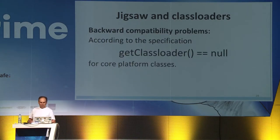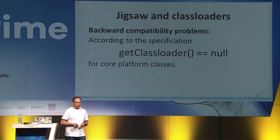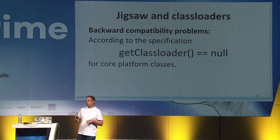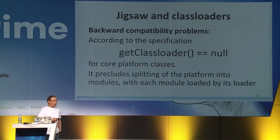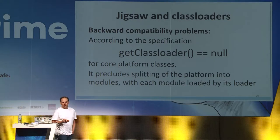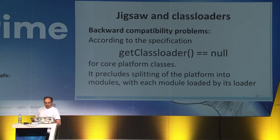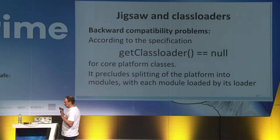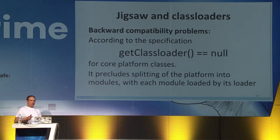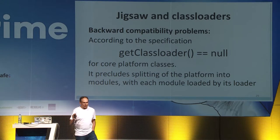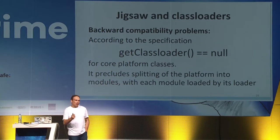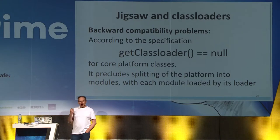For instance, according to the Java platform specification, all core platform classes should be loaded by the so-called bootstrap class loader — a JVM-internal class loader with no instance. So getClassLoader() from core platform classes should return null. This efficiently precludes splitting the platform into modules where each module is loaded by its own class loader. The fact that some sun.misc.Unsafe could be unavailable in Java 9 is not a backward compatibility problem — because the Java platform specification never claimed that sun.misc.Unsafe should be in the Java platform. But the specification does claim that core platform classes must be loaded by the bootstrap class loader, and changing that behavior would have directly violated backward compatibility.